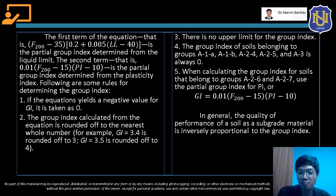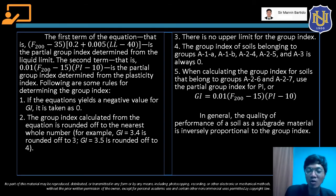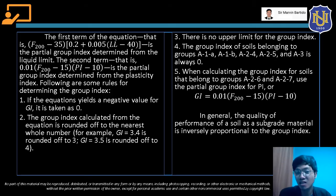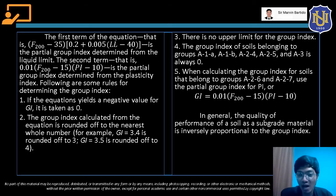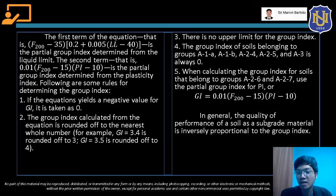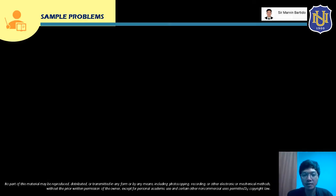In general, the quality of performance of a soil as a subgrade material is inversely proportional to the group index. A higher group index means poorer performance. A GI of 0 indicates excellent to good subgrade material.